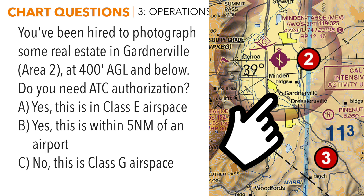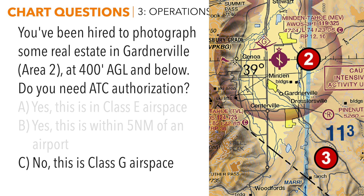Underneath the Class E airspace here you'll find Class G airspace, which is uncontrolled — that means you do not need authorization to fly here. Yes, it is near an airport, but as Part 107 pilots you don't need authorization to fly within five nautical miles of an airport. And if you're at 400 feet and below, you will not be in Class E airspace. So the correct answer is no — you do not need authorization; this is Class G airspace.